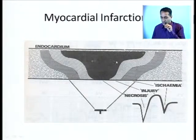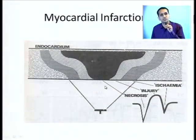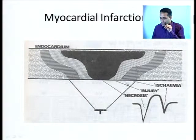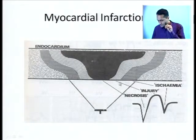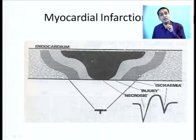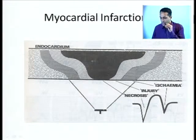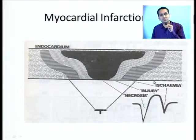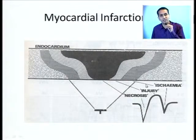The central zone is what is called the area of necrosis, where the muscle is totally dead. Surrounding that, you have an area of injury where the Myocardium is partially salvageable, and then a peripheral zone of ischemia where the muscle is very likely to be viable.